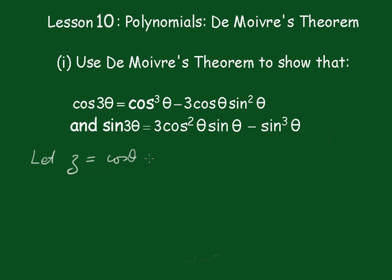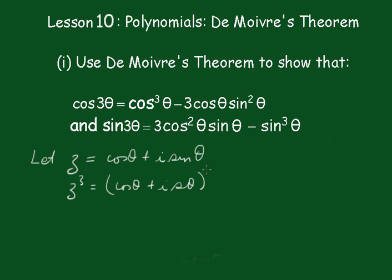Now we'll cube both sides of this equation, so z³ equals (cosθ + i sinθ)³. By De Moivre's Theorem, we know that this becomes cos3θ plus i sin3θ.